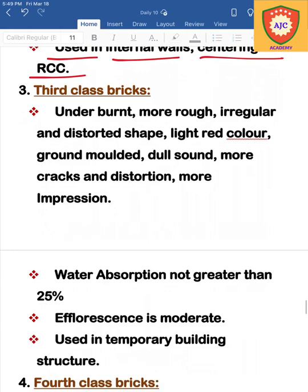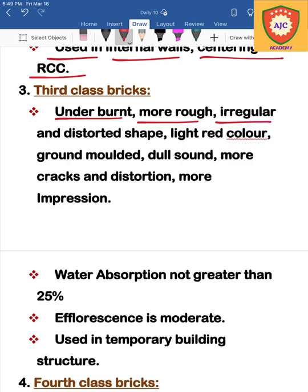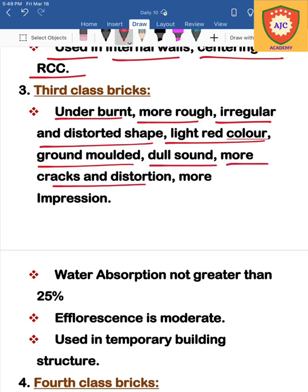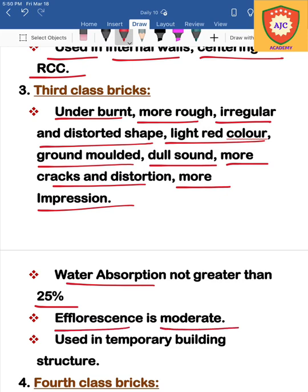Third class bricks are under burnt, more rough, irregular, and distorted in shape. They are light red in color, ground molded, and produce a dull sound with cracks and distortion. Water absorption capacity is 25% and efflorescence is moderate. Third class bricks are used in temporary structures.